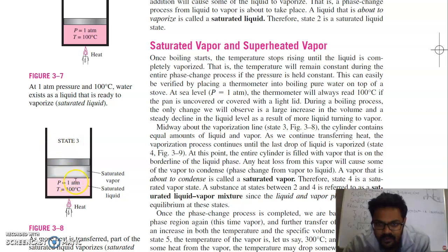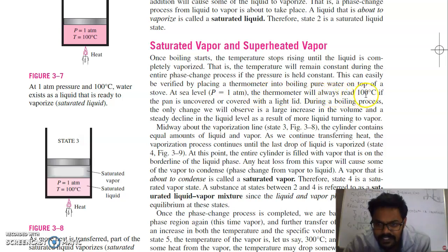This can be easily verified by placing a thermometer into boiling pure water on top of a stove at sea level, where pressure is one atmospheric. You can check on a boiling container of water — it will show 100 degree Celsius. The thermometer always reads 100 degree Celsius whether the pan is uncovered or covered with a light lid. During boiling, the only change we observe is a large increase in volume and a steady decline in liquid level as more liquid turns to vapour.